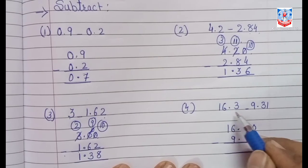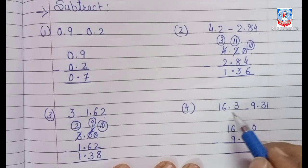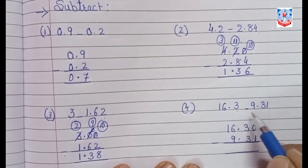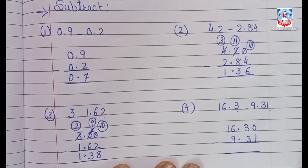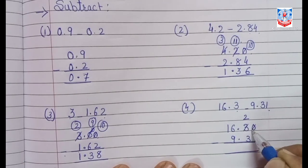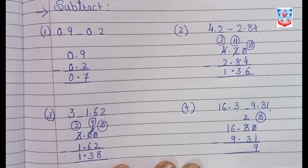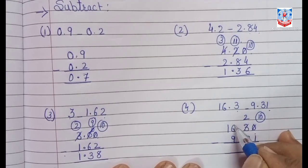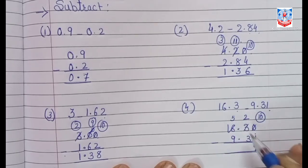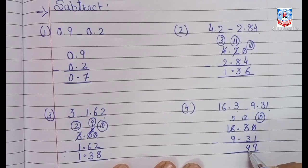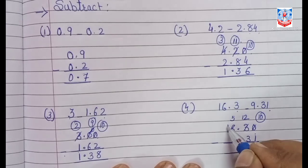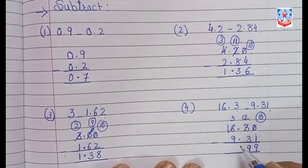Next, 16.3 minus 9.31: 16.3 goes to the tenths place, but 9.31 goes to the hundredths place, so put a zero in the hundredths place of 16.3 to make it 16.30. In the hundredths column, 0 minus 1 — borrow: 10 minus 1 is 9. In the tenths column, 2 minus 3 — borrow: 12 minus 3 is 9. Place the decimal point. Borrow for ones: 5 minus 9 — bring 15 minus 9 is 6 — so the answer is 6.99.